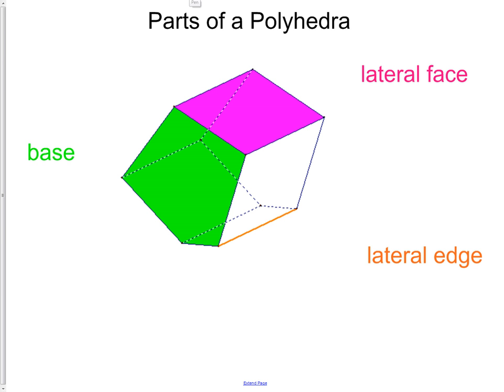First off, we have a lateral face. The lateral face would be this pink area here. The lateral face would be any face which would not be the base. In this picture, you can notice that we have the green shaded-in area. That would be the base. It's parallel to the other object that has the same shape, same size on the other end. And therefore, those are called the bases. What's left behind would be called the lateral faces.